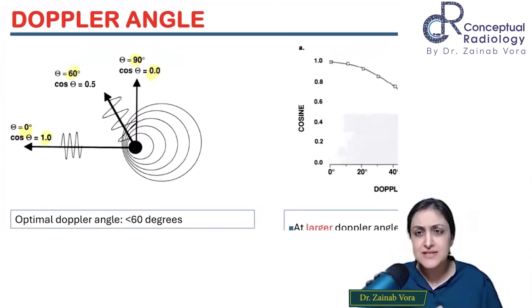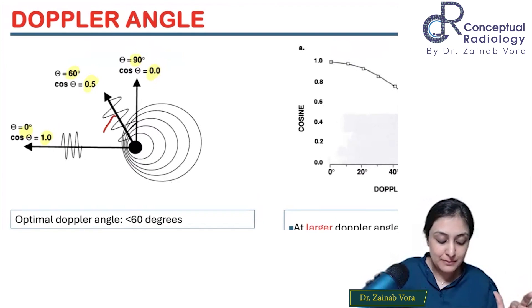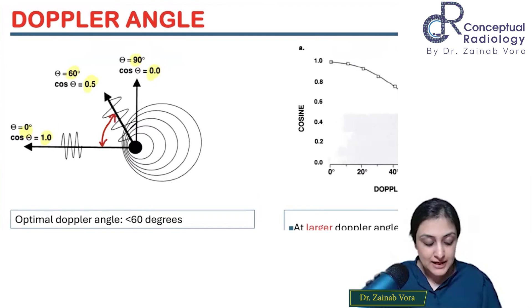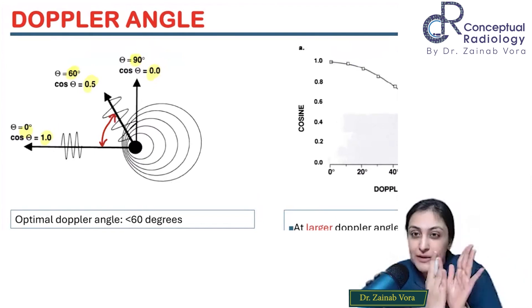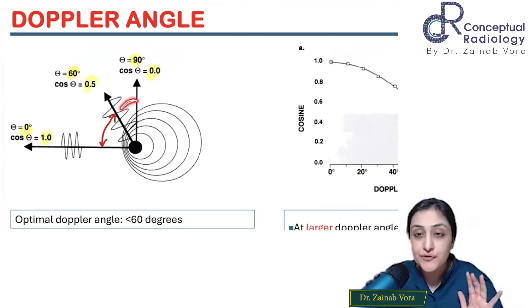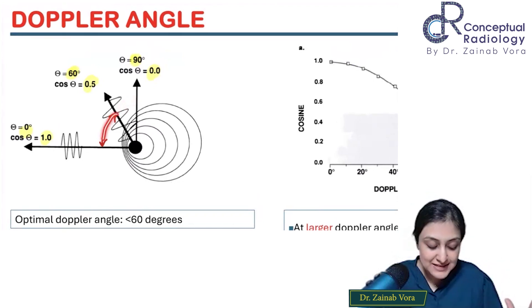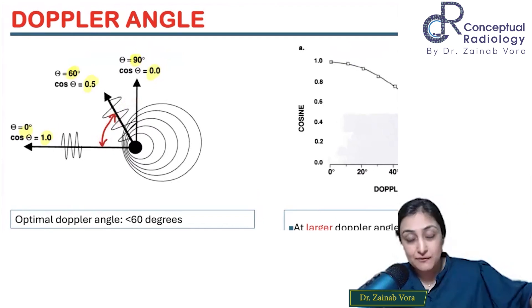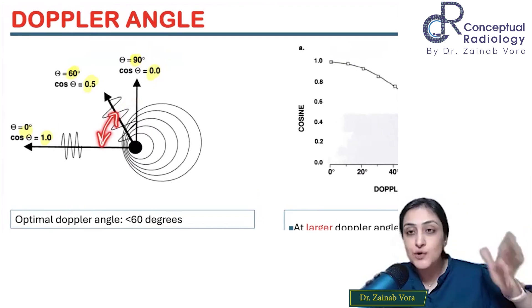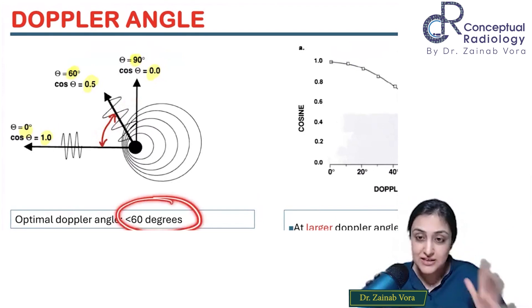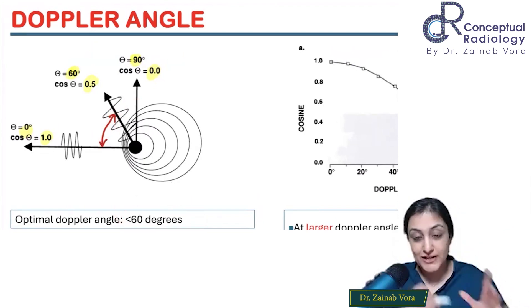So cos 90 is 0, cos 0 is 1. I need to be closer to cos 0. Cos 60 is a doable angle that gives me 0.5. My aim is to be between 60 degrees and 0 degrees. Between 60 to 90, in 30 degrees I'm losing half the signal. But between these 60 degrees I'm gaining half the signal. Our optimal Doppler angle is always less than 60 degrees.